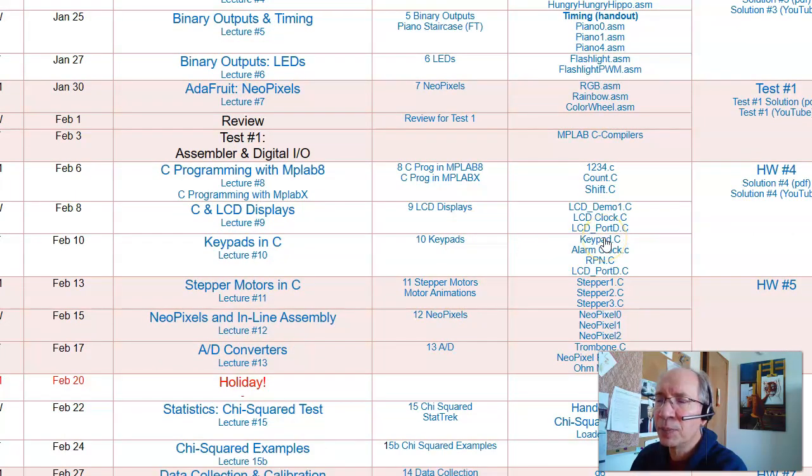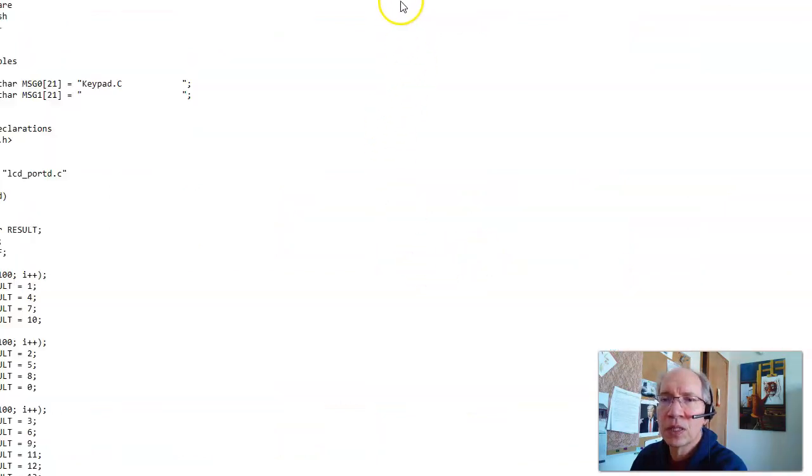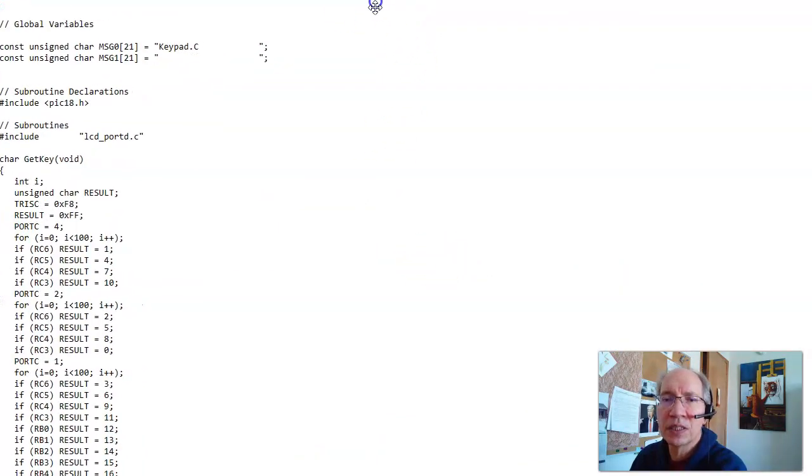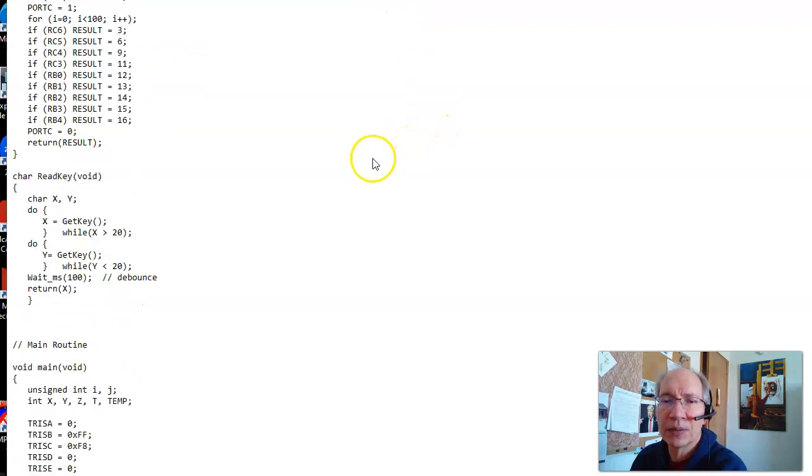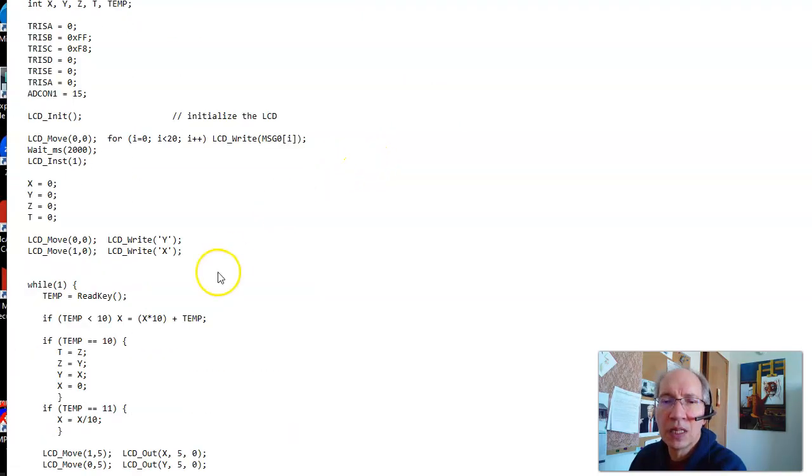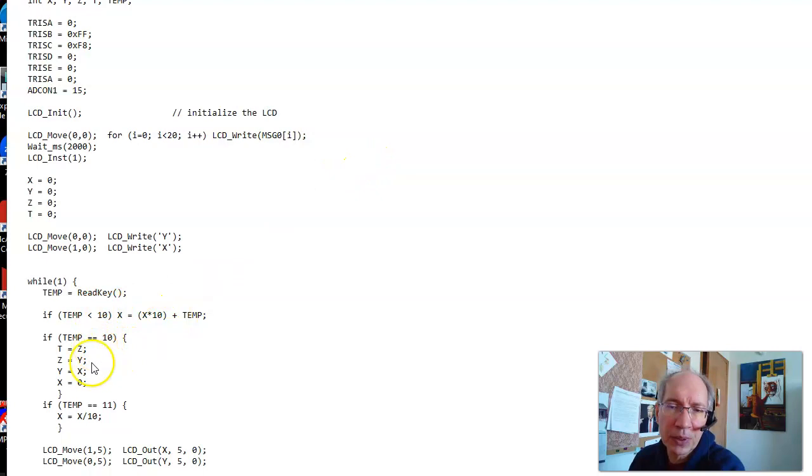Let's start with the keypad routine. This will let me read the different numbers on the keypad. Down here, I've got input the number, a push command, sets up the registers. This is clear it. If temp equals 12, that's RB0. If I hit RB0 or temp equals 12, do something.